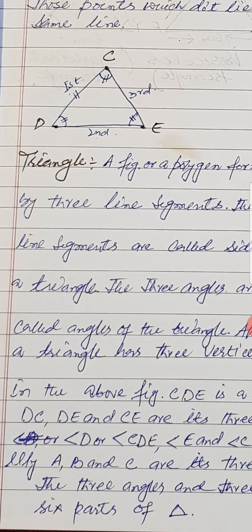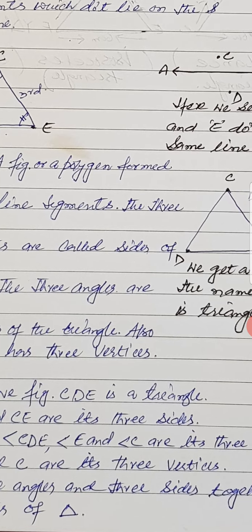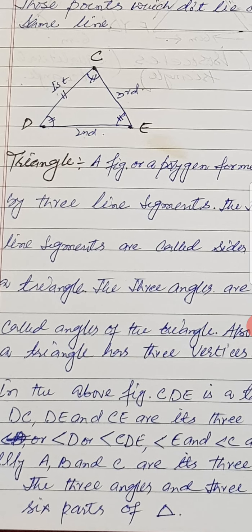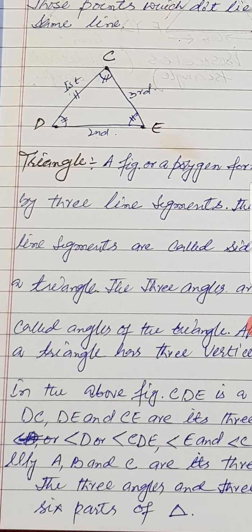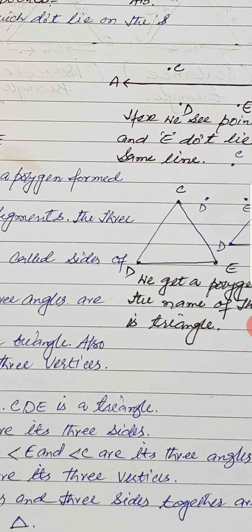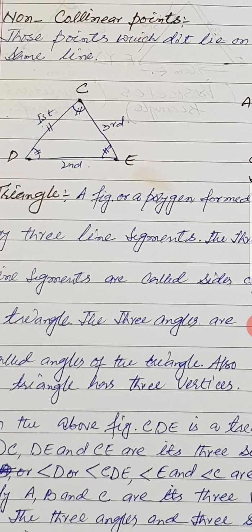Similarly, if we label a triangle with points A, B and C, then points A, B and C are the three vertices, with three angles and three sides. The three angles and the three sides together are called the six parts or six elements of the triangle. So what are the six parts of a triangle? They are three sides and three angles. This is the complete definition of a triangle.